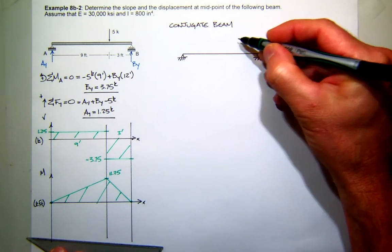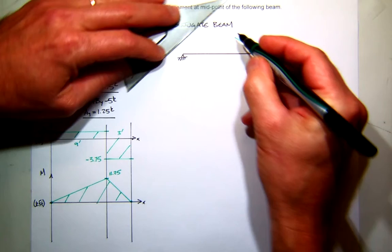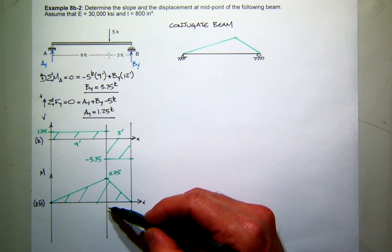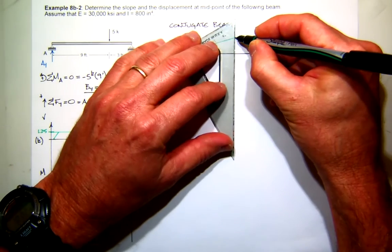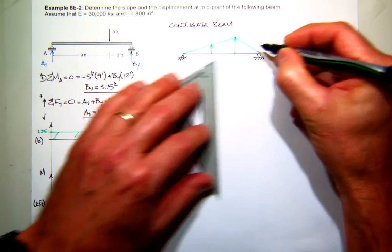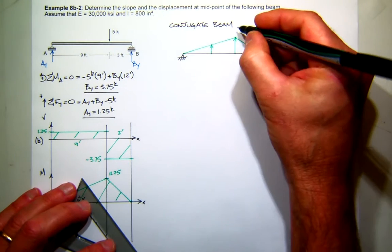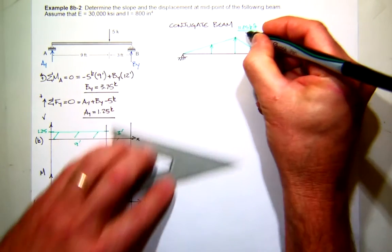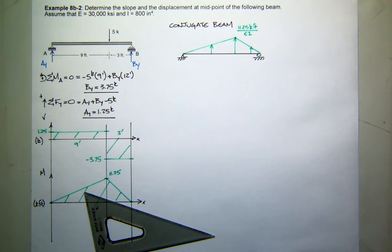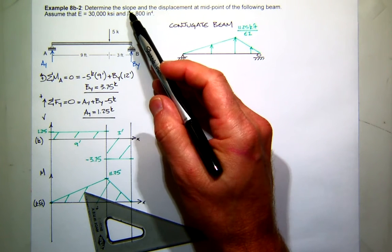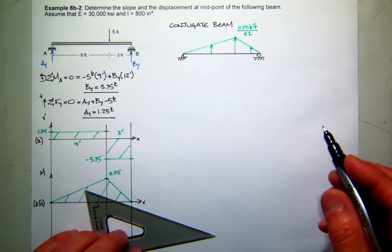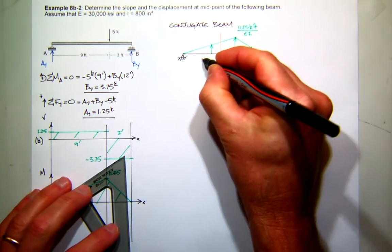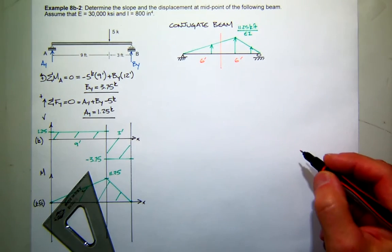Except now in that conjugate beam, what am I going to apply? This load. So I like to just draw my moment diagram right on the beam. There's the shape. Now this moment is all positive, so as load, what direction is positive load? Up. So this load will be up and it will have the value of 11.25 kip feet divided by EI. That's the problem I need to work. In this space, I want the slope and displacement at the midpoint. The midpoint is 6 feet, which would be right about here.